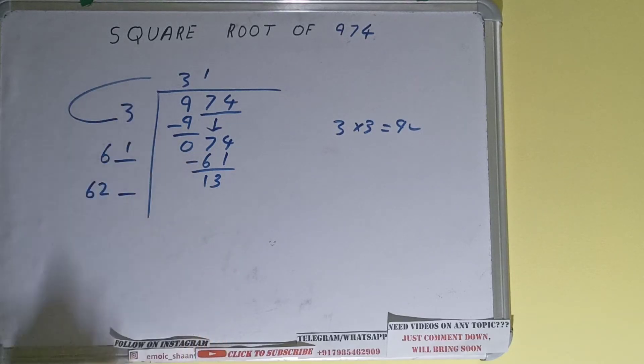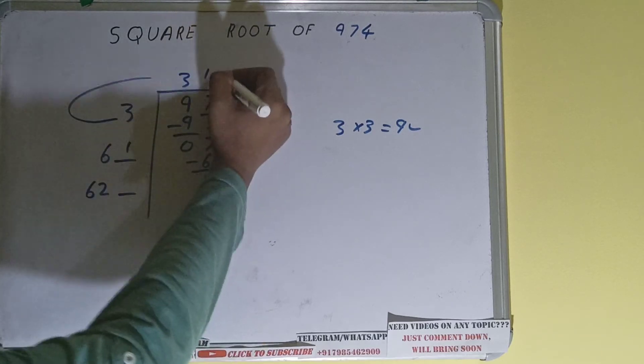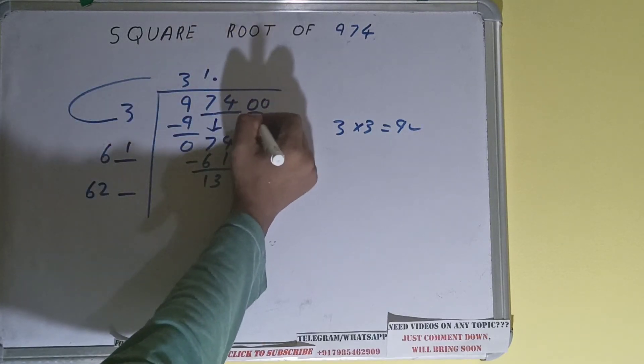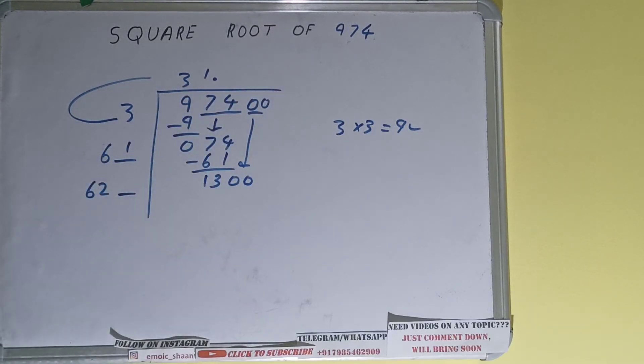And this number we need to make it big, but we don't have more pairs, so we'll put a decimal. Once we put the decimal, we can bring a pair of zeros down and it will become 1300.